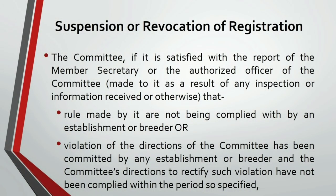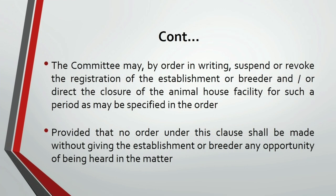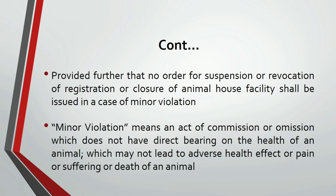If any establishment is found not following particular rules or standards, their registration could be suspended or revoked. For any kind of violation, except a minor one, the breeder or establishment's registration could be suspended. This suspension will be given in writing, stating for how long the registration has been cancelled. Once a suspension is given, the establishment will also be given the chance to be heard — to give the reason for the violation. For minor violations, registration cannot be cancelled, but these minor violations should not directly affect the health of the animal, leading to adverse health effects, pain, suffering, or death.